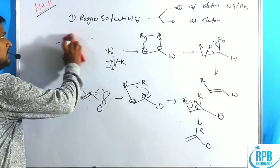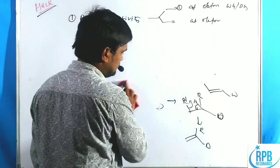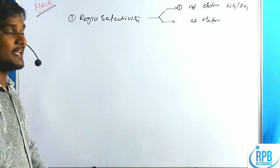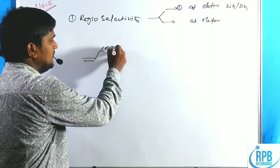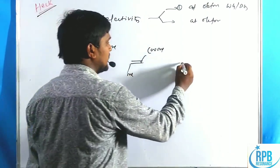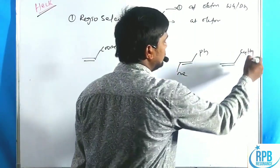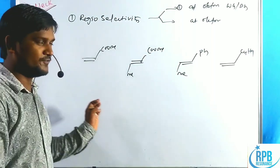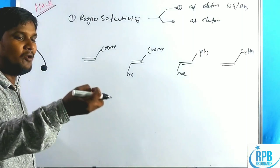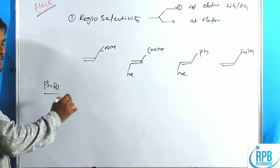Now let us discuss the second aspect of regioselectivity with direct examples. We will examine four cases: COO-methyl substituent, COO-methyl with methyl group, phenyl with methyl, and C₄H₉. In all cases we analyze where phenyl bromide (the aryl halide) attacks the alkene.